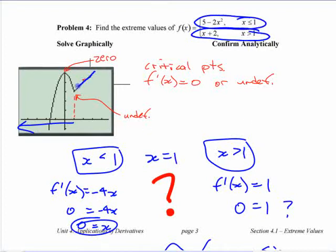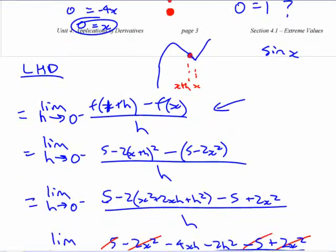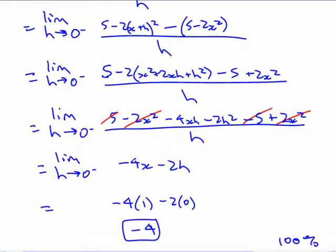We're aiming to confirm that the slope is positive one on the right and negative four on the left. We already found that it was negative four on the left by going through the long definition here.